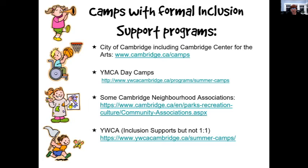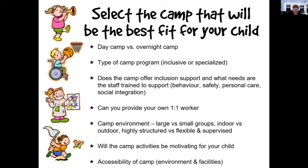In Cambridge, we're very lucky to have four different camps with formal inclusion support programs: the City of Cambridge (which includes the Centre for the Arts), the YMCA, and the YWCA. The YMCA will do some one-on-one, and some neighborhood associations also have one-on-one support. The YWCA has inclusion support, but it's not one-to-one.